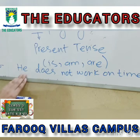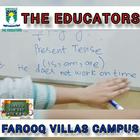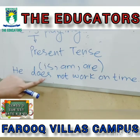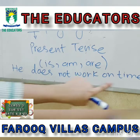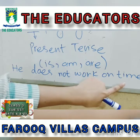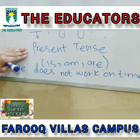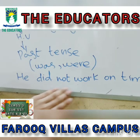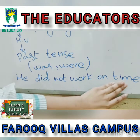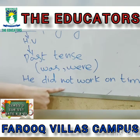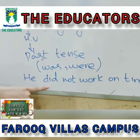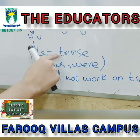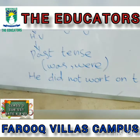In the sentence 'He does not work on time', 'does' is a helping verb. With the help of this helping verb we can recognize that the sentence is present tense. Now, 'He did not work on time' — in this sentence 'did' is a helping verb, and with this we can recognize that the tense of the sentence is the past tense.